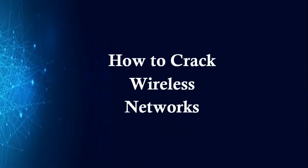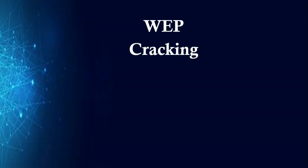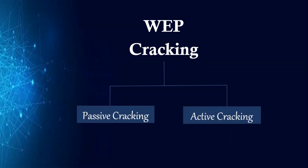How to crack wireless networks? WEP cracking is the process of exploiting security weaknesses in wireless networks and gaining unauthorized access. There are basically two types: Passive cracking — this has no effect on the network traffic until the WEP security has been cracked, and it is difficult to detect. Active cracking — this has an increased load effect on network traffic, is easy to detect, but is more effective compared to passive cracking.